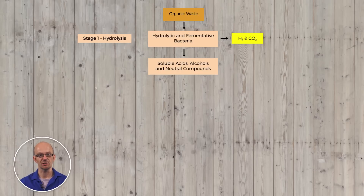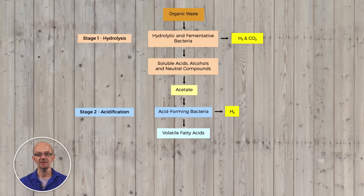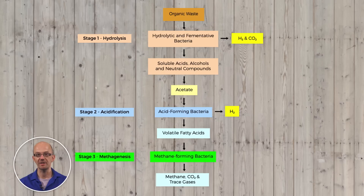This first stage is named the hydrolysis stage. In the next stage, the acidification stage, acidogenic bacteria break the hydrolysis stage products into simpler molecules and volatile fatty acids. These simpler molecules and volatile fatty acids can be transformed into biomethane by methanogens in the methanogenesis stage. If methanogenesis is inhibited, acidogenic bacteria will transform the simpler molecules and volatile fatty acids to bioethanol.